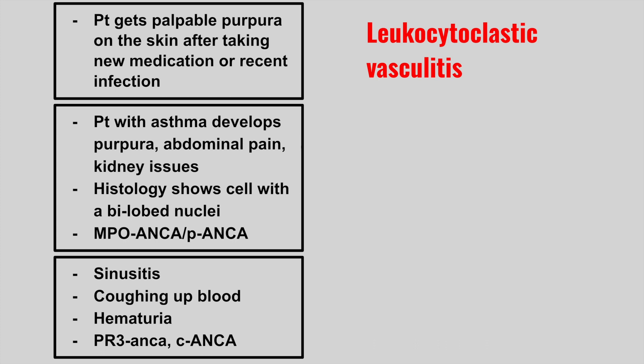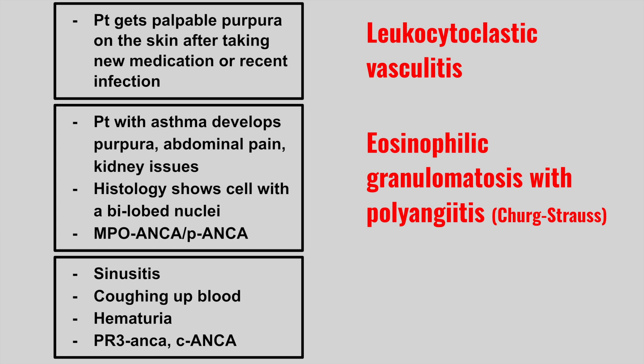Next, we have a patient with asthma who develops purpura, abdominal pain, and kidney issues. Histology is going to show cells with a bilobed nucleus, and there is an MPO-ANCA, P-ANCA positive result. So this is eosinophilic granulomatosis with polyangiitis, also called Churg-Strauss. The cells with the bilobed nucleus are eosinophils, and the name itself indicates granuloma formation.